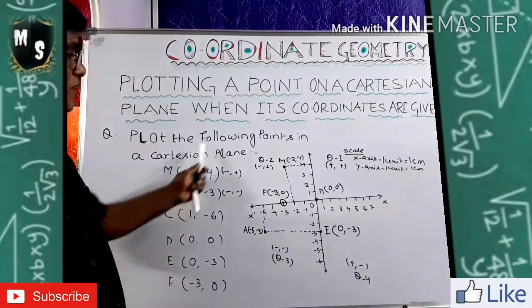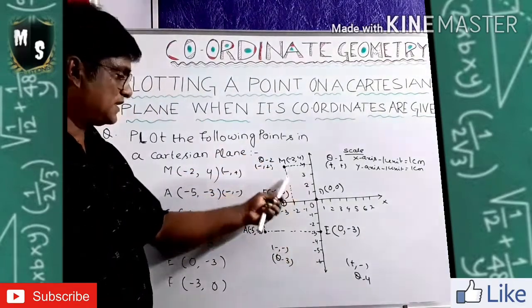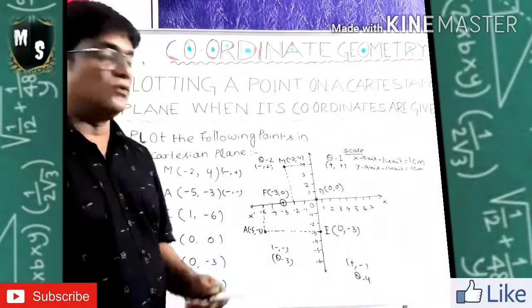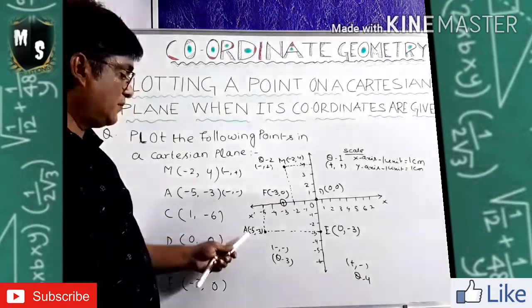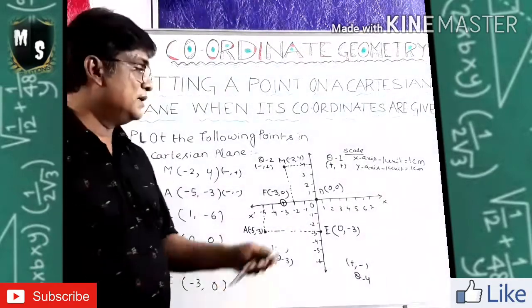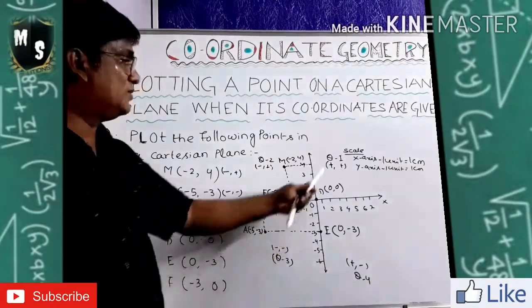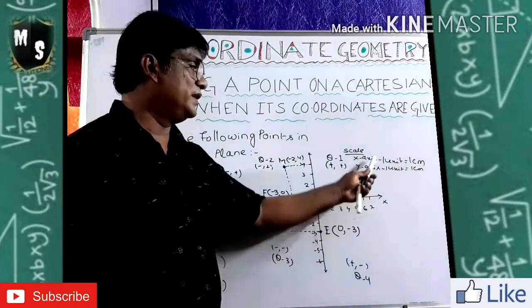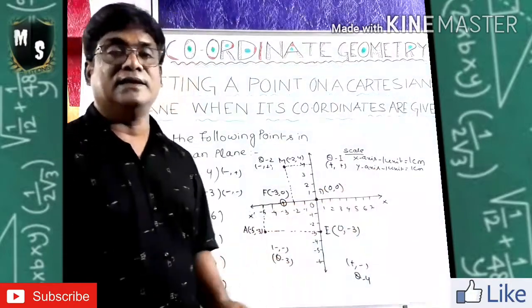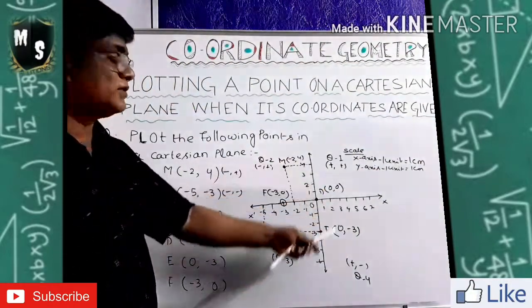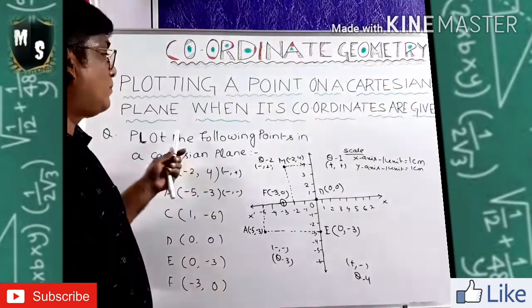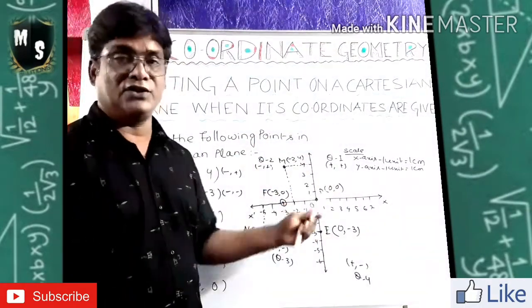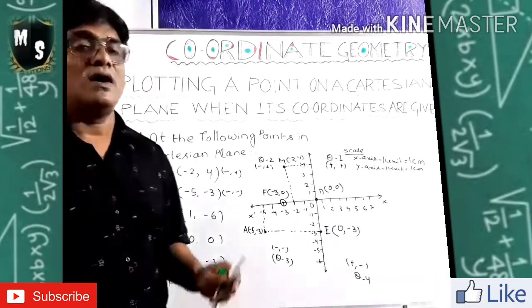When plotting, dotted lines must be drawn to locate the points, coordinate pairs must be written, quadrants must be labeled, and the scale on which measurement is done must be written on both X and Y axes. Then it is called a complete demonstration of points with given coordinates on a Cartesian plane.